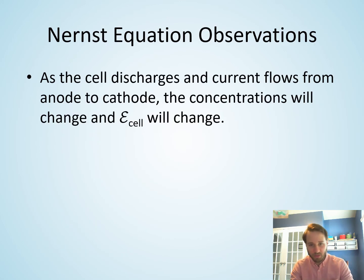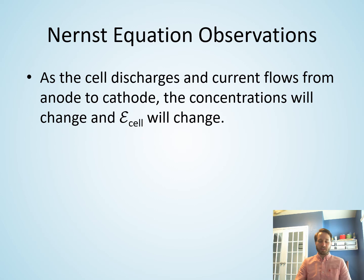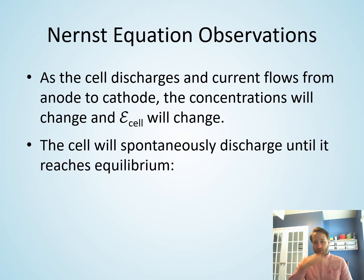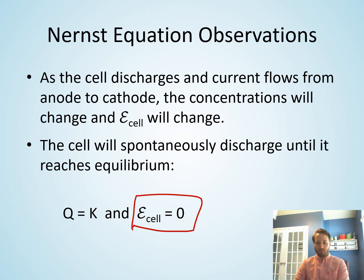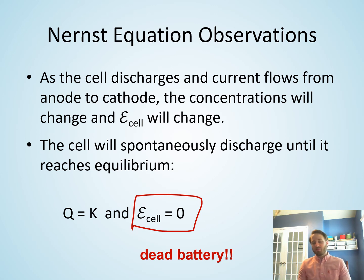One key observation from the Nernst equation: as electrons flow in the spontaneous direction and the reaction proceeds, more and more products form while reactants are consumed. Eventually you reach equilibrium, where Q equals K and the cell potential equals zero. This is a dead battery — when your battery dies, it's because the electrochemical reaction inside has reached equilibrium and no longer produces a net driving force.